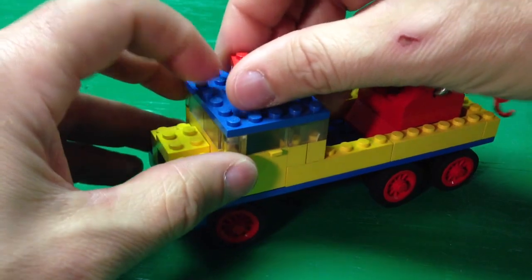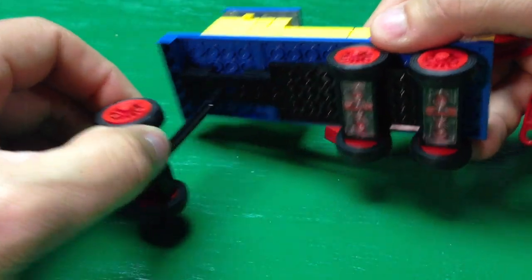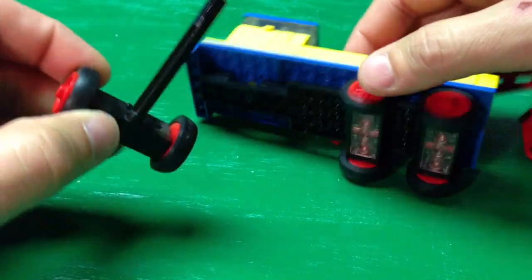I'll go ahead and take this off. This is how it works. The rod goes all the way through the vehicle and out the bottom like that. And that's your steering mechanism.